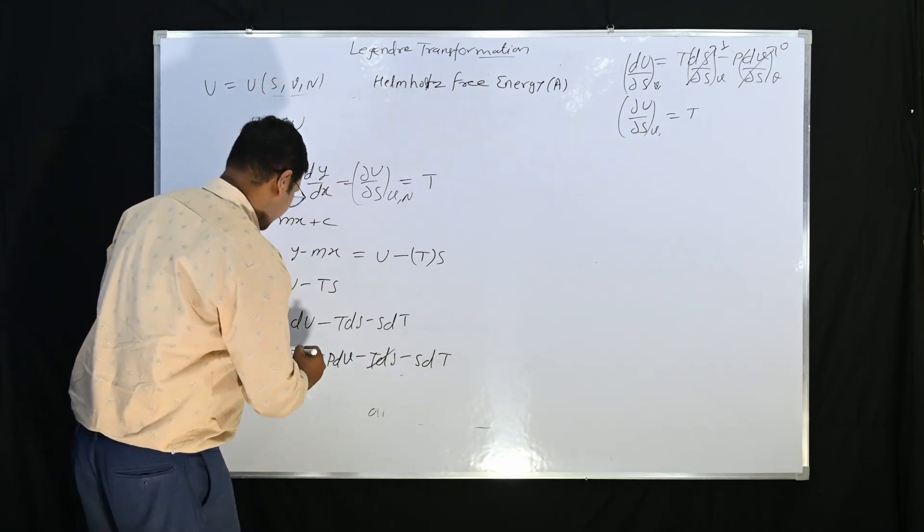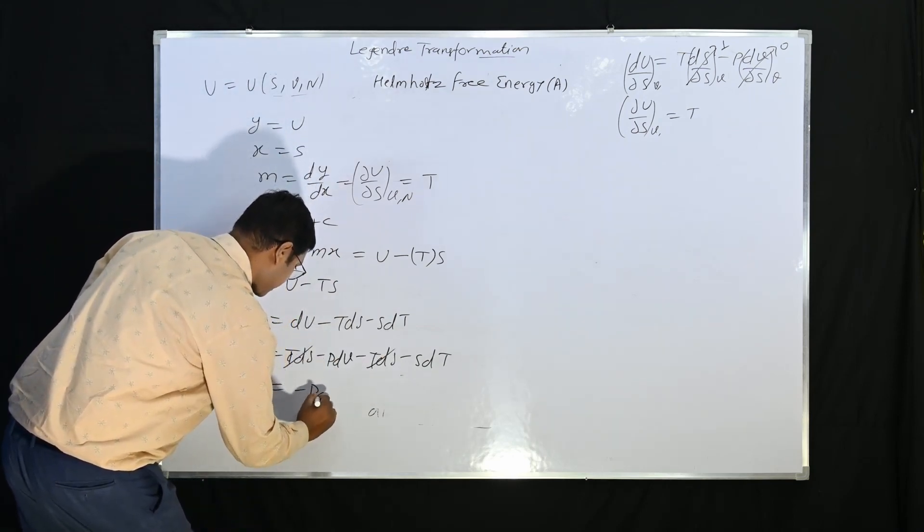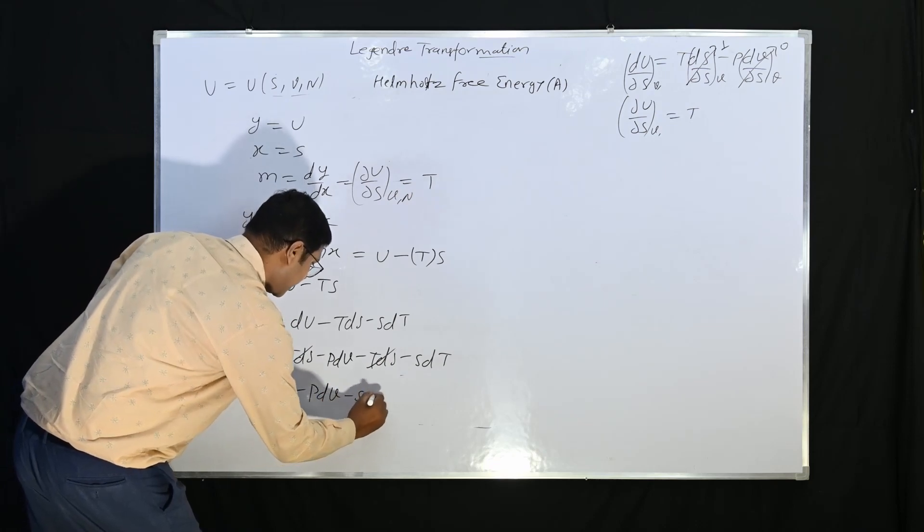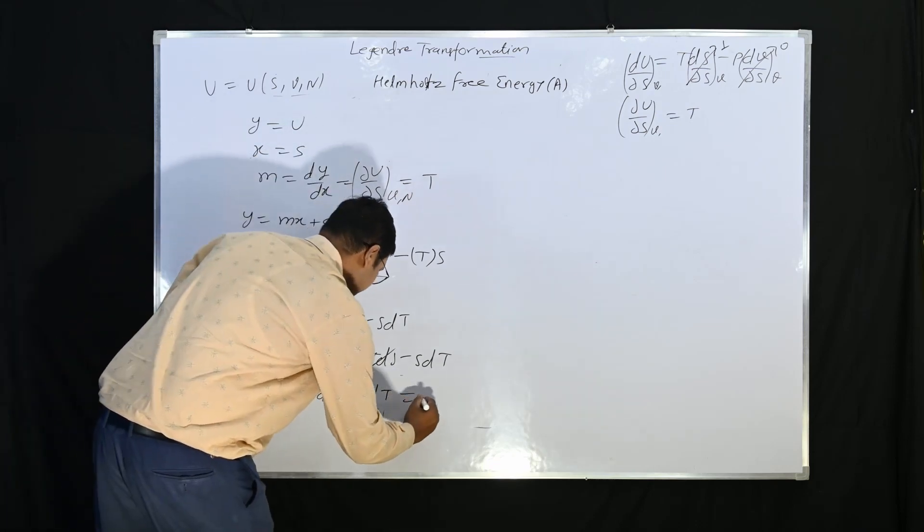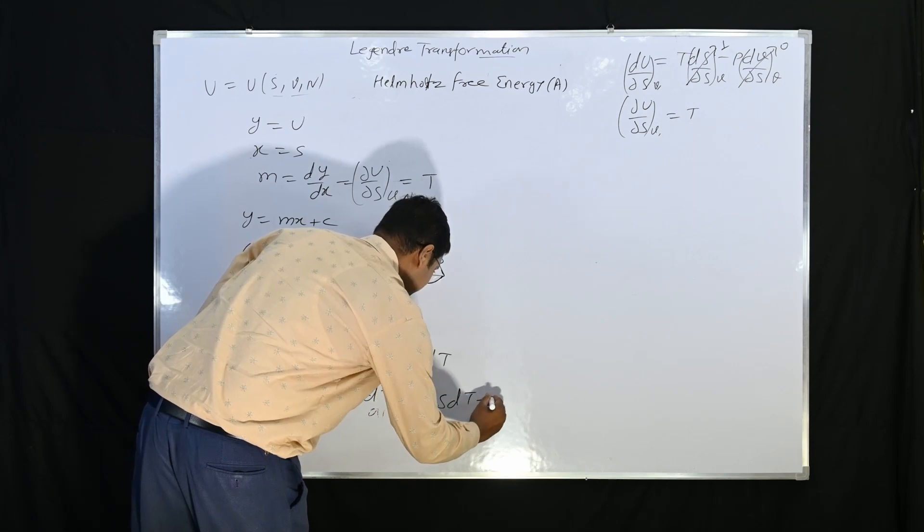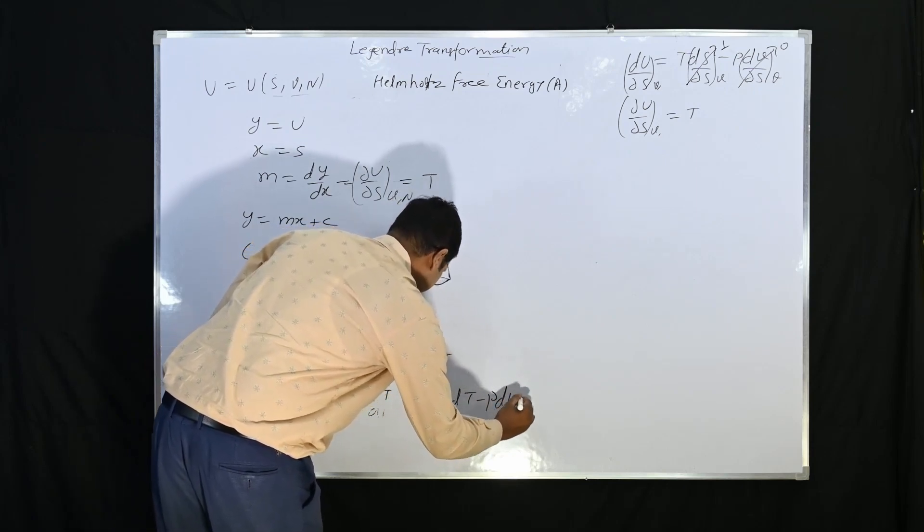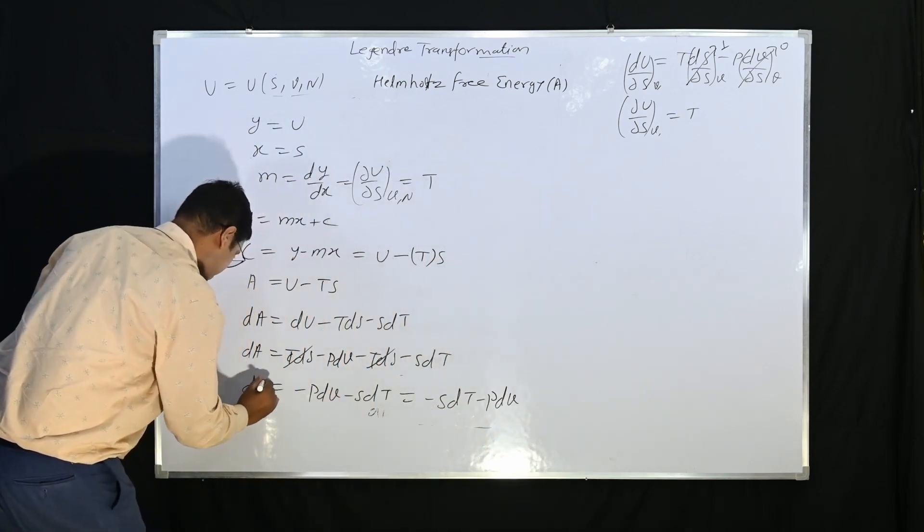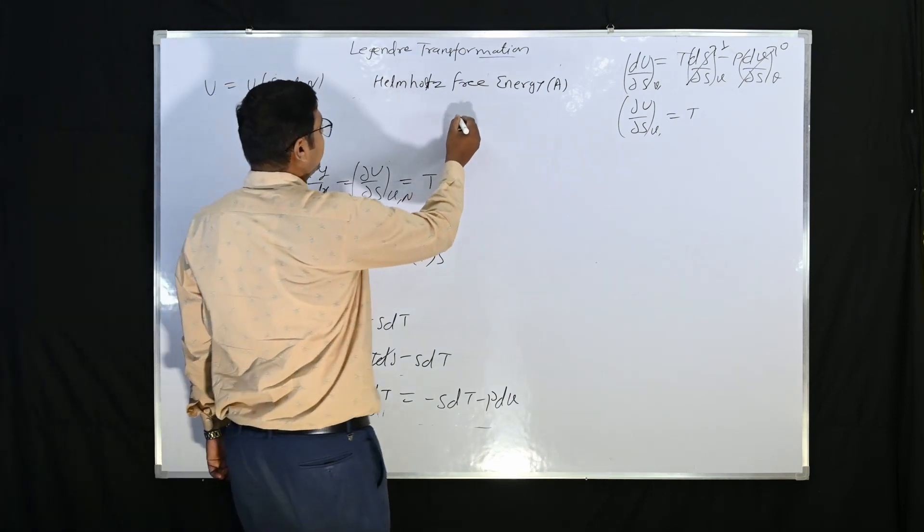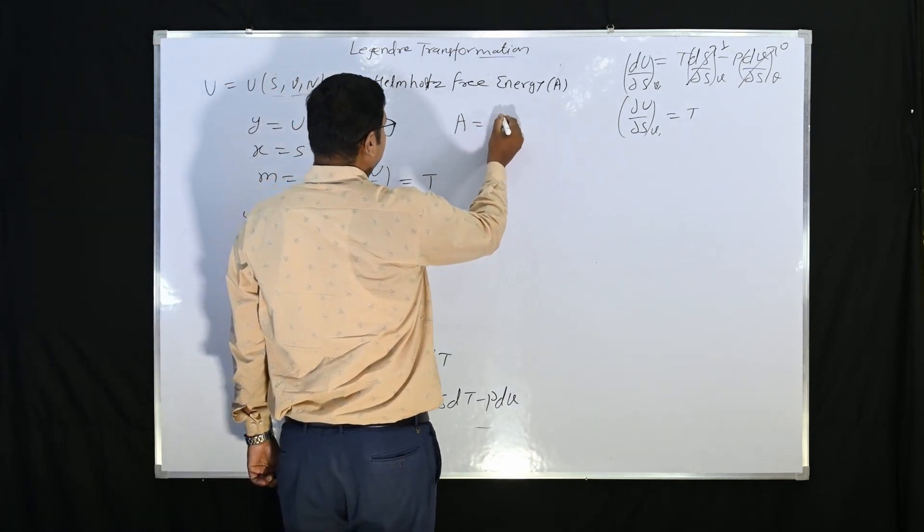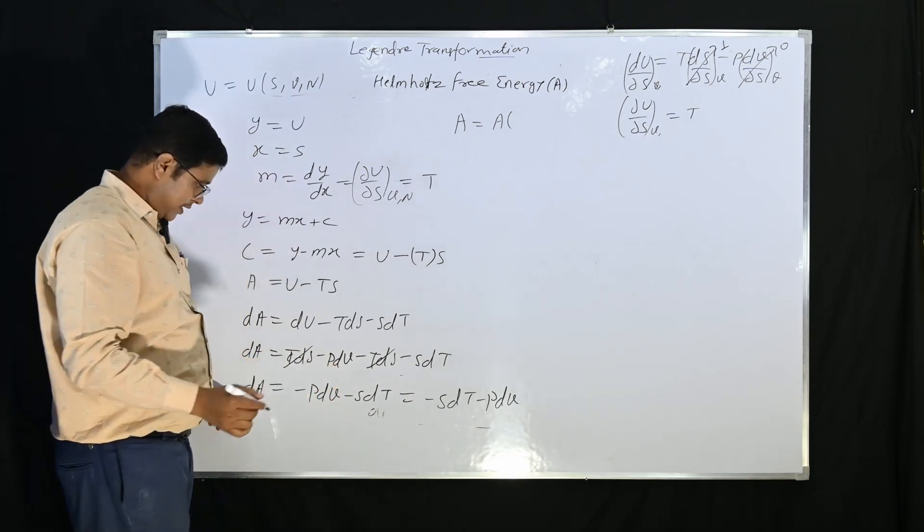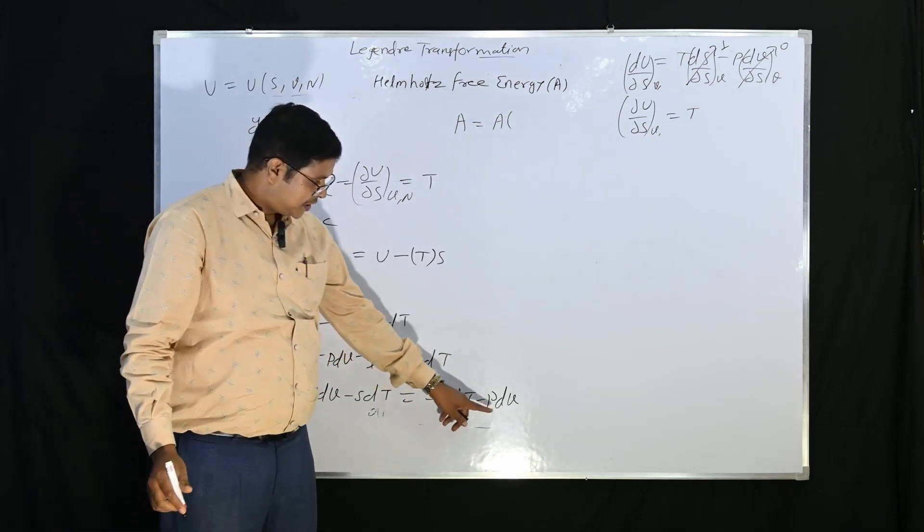So TdS will be cancelled and the term remaining is minus PdV minus SdT. That is what is dA. Or we can see that A is a function of T and V.